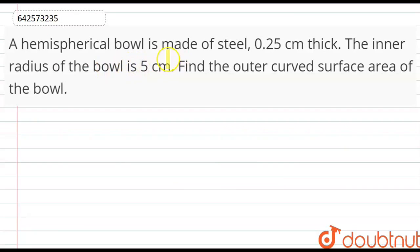Hello everyone. In this question, a hemispherical bowl made of steel is given in which the thickness is 0.25 cm. The inner radius of the bowl is 5 cm. Find the outer curved surface area of the bowl.